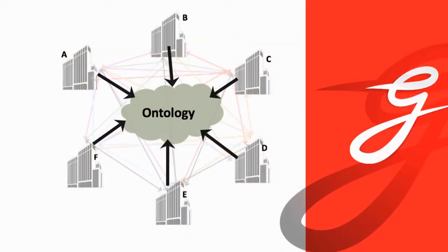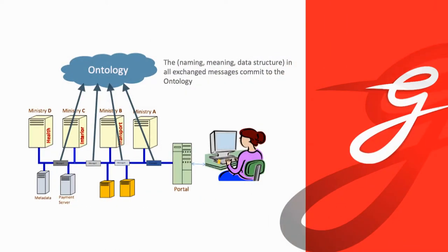So what is the solution? The framework for semantic interoperability is to build an ontology. You say this ontology is shared among all organizations, everyone respects it, and we don't need any more technical MOUs.